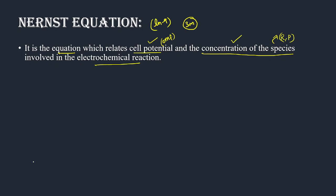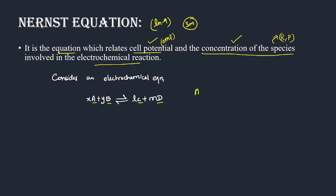Now the Nernst equation is going to be derived. We are going to write an electrochemical reaction. So consider an electrochemical reaction — I will try to write as neat as possible. Let's consider an electrochemical equation and write the reaction quotient.